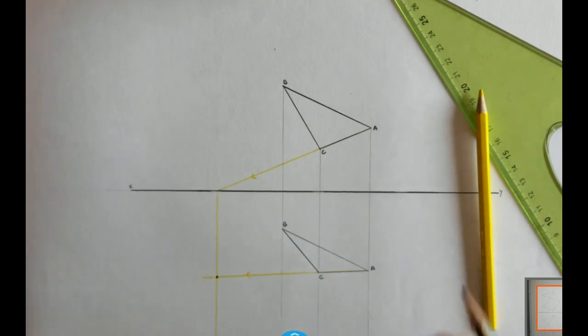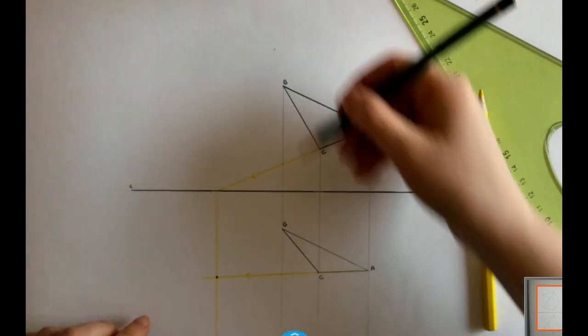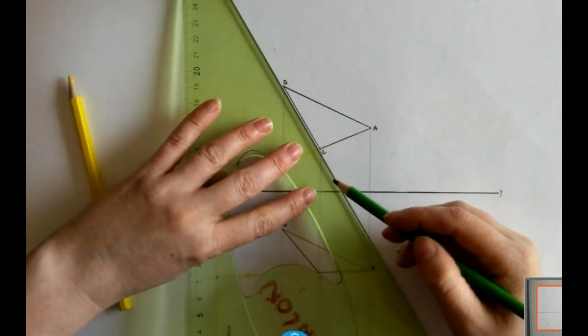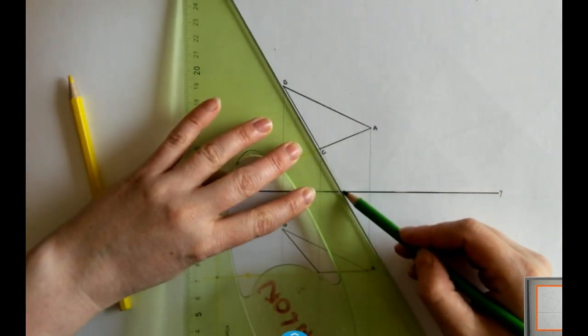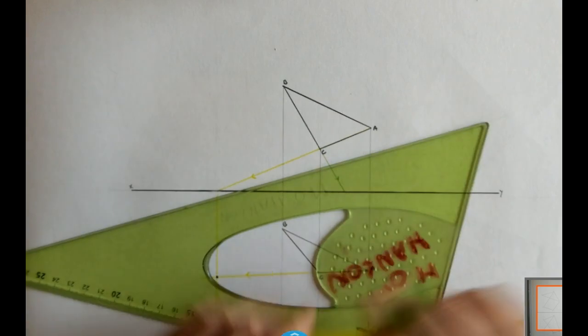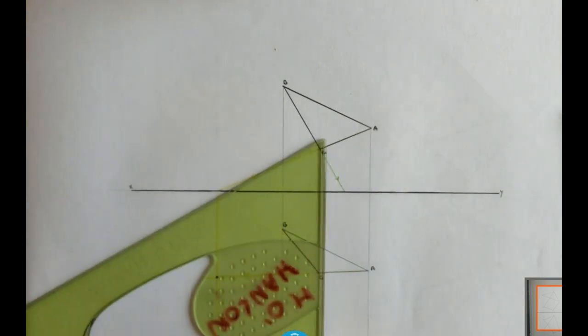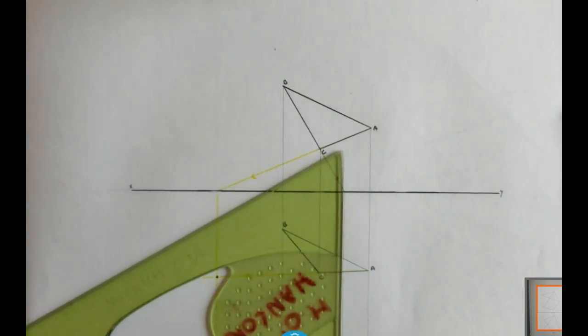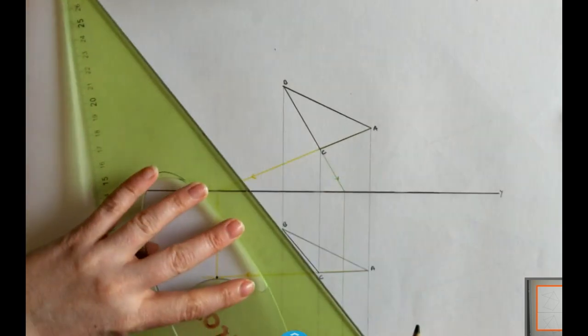Now I know for a fact that this point here is definitely a point on my horizontal trace. I need to do the exact same thing again. So this time I'm going to extend BC. I'm just going to use a different color just to show the two different constructions. Where it hits my XY line I'm going to bring it down again. And in my plan now I'm going to extend BC.